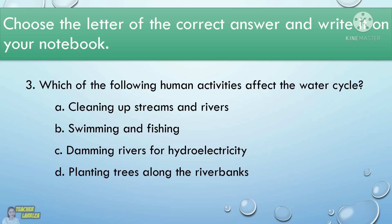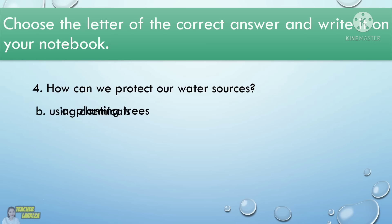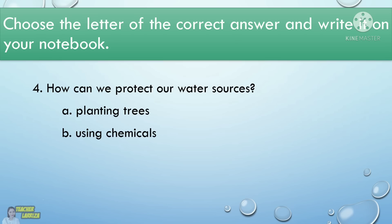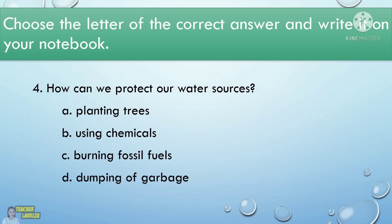4. How can we protect our water sources? A. Planting trees. B. Using chemicals. C. Burning fossil fuels. D. Dumping of garbage. 5. Which of the following statements is false? A. Water cycle is important because it is how water reaches plants, animals, and humans. B. 97% of the water in our surroundings is fresh or potable. C. Water gives the Earth its characteristic blue color as seen from outer space. D. Water can change into three phases.